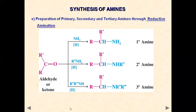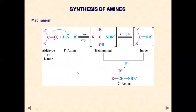Let's see the mechanism for one case: aldehyde or ketone reacting with a primary amine. The amine nitrogen lone pair attacks as a nucleophile on the carbonyl carbon, breaking the C=O bond to give a hemiamine intermediate. This hemiamine undergoes tautomerization — loss of water from the hydrogen and OH — to give an imine. This imine on reduction then gives a secondary amine.